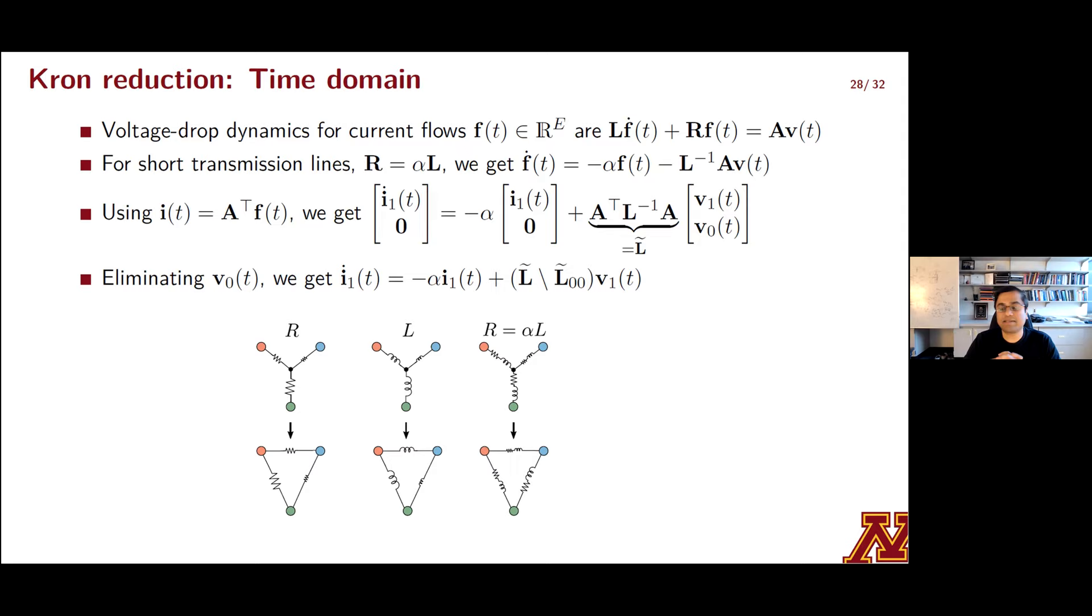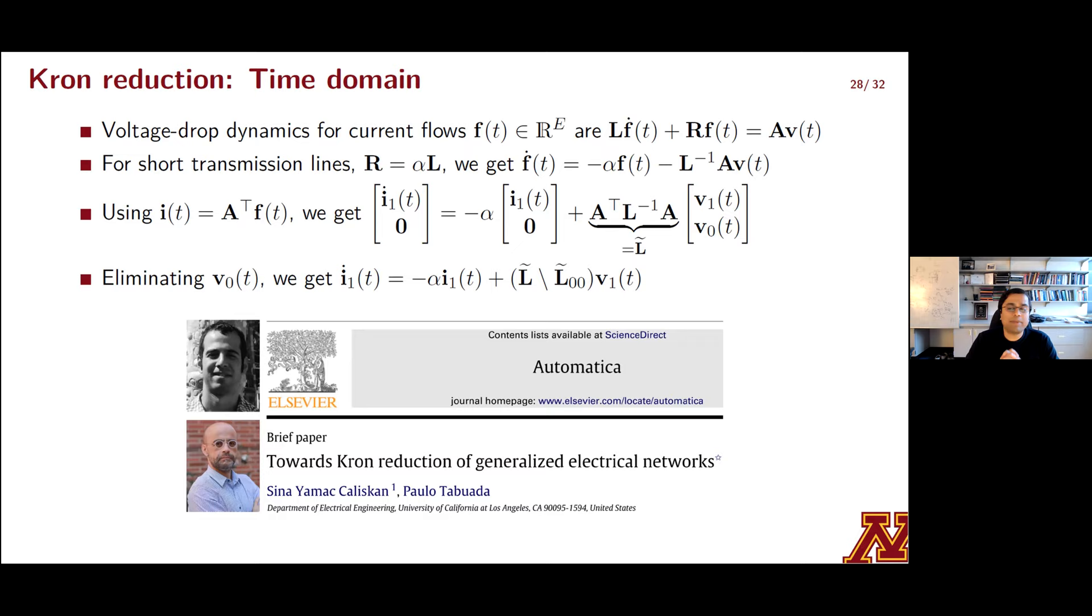So using KCL, you can express the current injections as A transpose the flows. And then you can partition the dynamical equation and arrive at a form that's similar to what you get in the phasor domain. You can then eliminate the voltages v0, which were voltages for the zero injection nodes, and then you'll obtain a reduced equivalent model for line dynamics in what remains, which are the current injections I1 and voltages v1. For the reduced order network, what we've done is we've represented this network Laplacian. It's weighted by this inductance matrix L, and we have this matrix L tilde that sort of captures all of this. The Schur complement of L tilde actually shows up in the line dynamics. And this is very reminiscent of the Schur complement of the admittance matrix that shows up in the phasor domain.